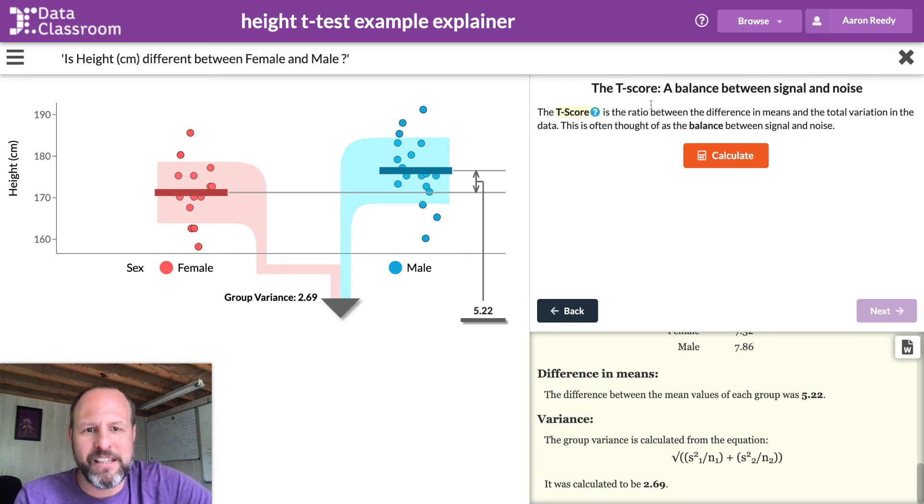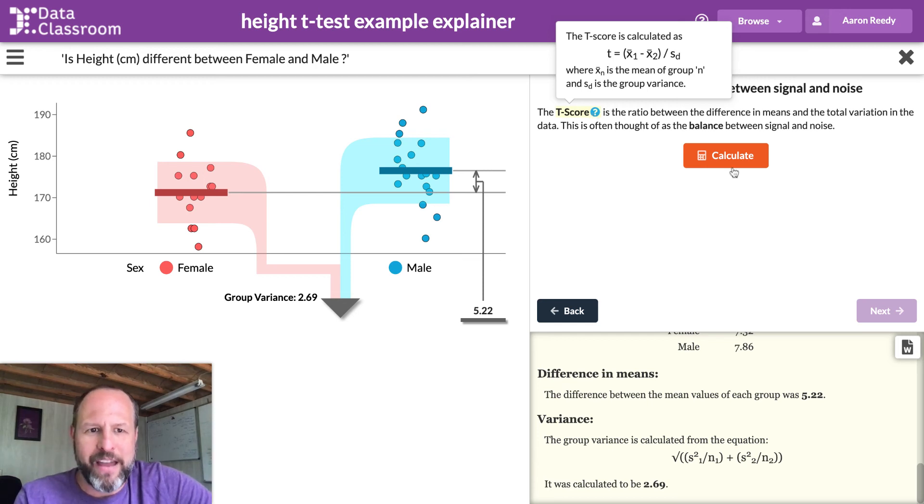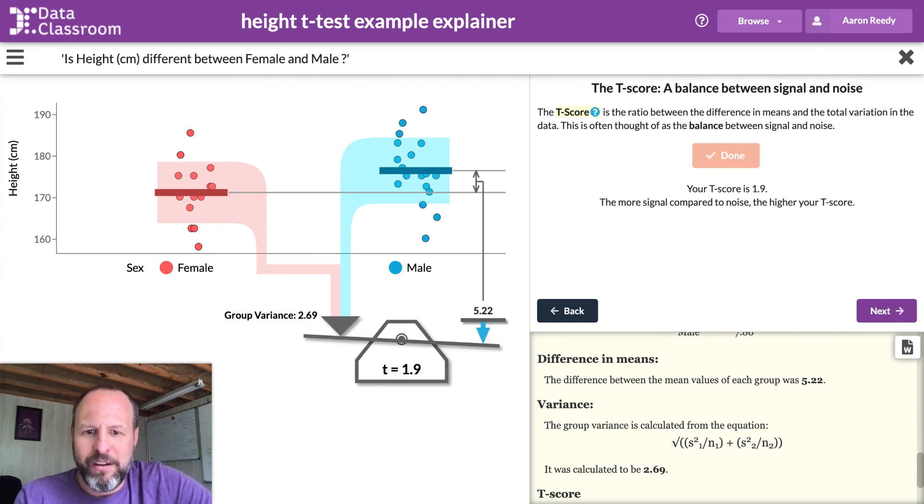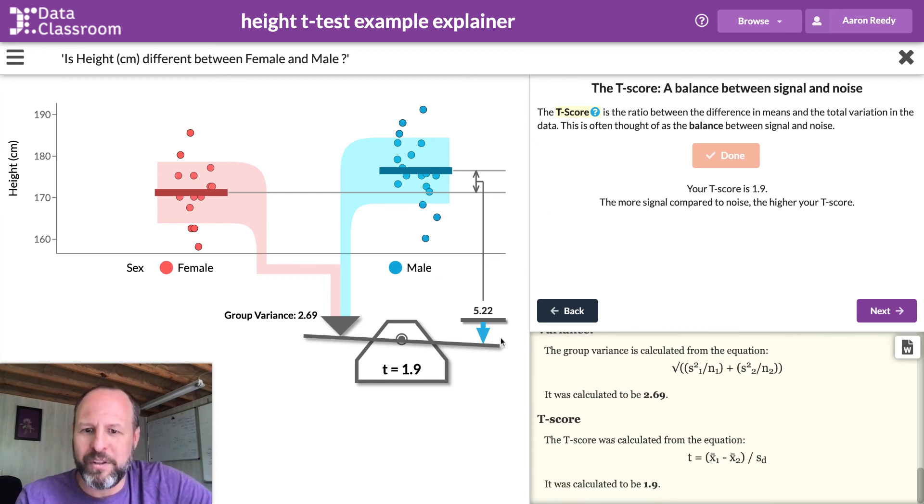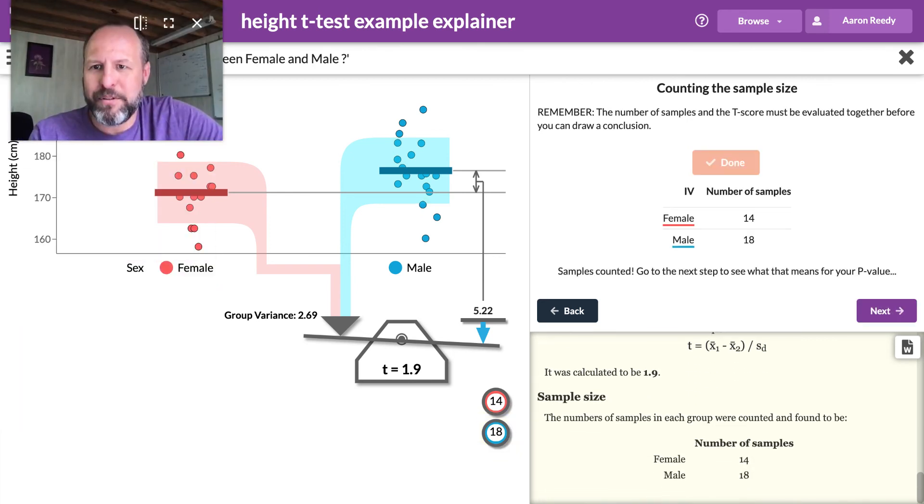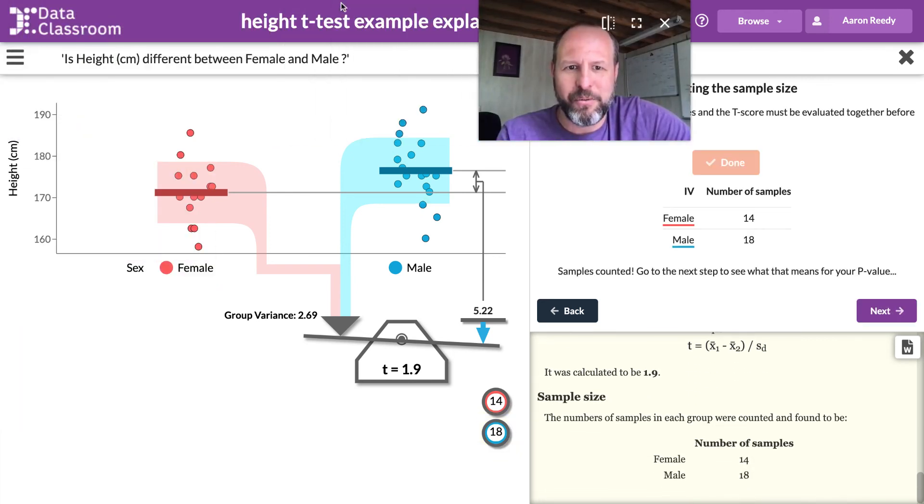And when we calculate the T-score, what we're doing is simply dividing the difference in means by that group variance. So we represent this with the analogy of the scale, and you can see the scale tips back and forth, but ultimately it's tipped a little bit more toward the difference in means with a value of 1.9 for our test statistic called T. If these quantities had been equal, we would get a 1.0 for a T-score. And now we count the sample size.